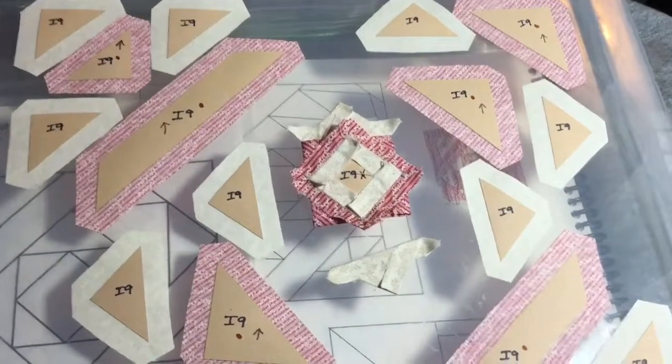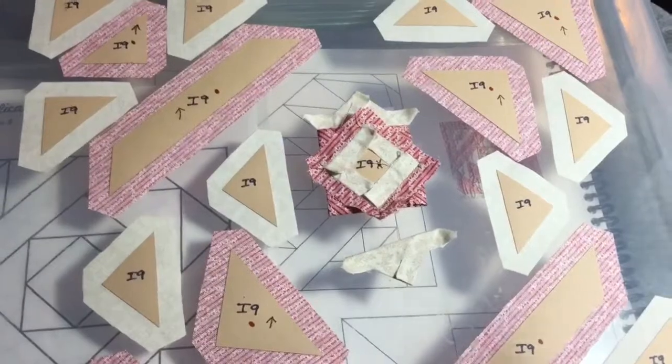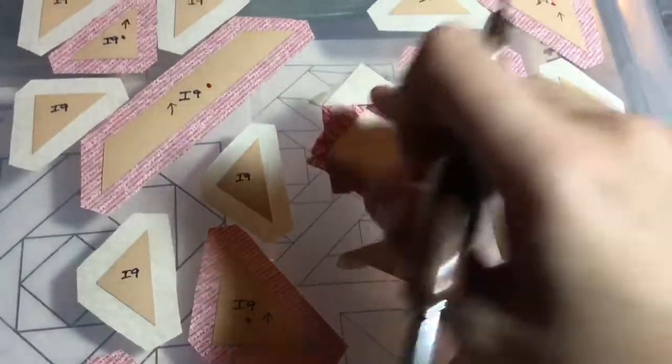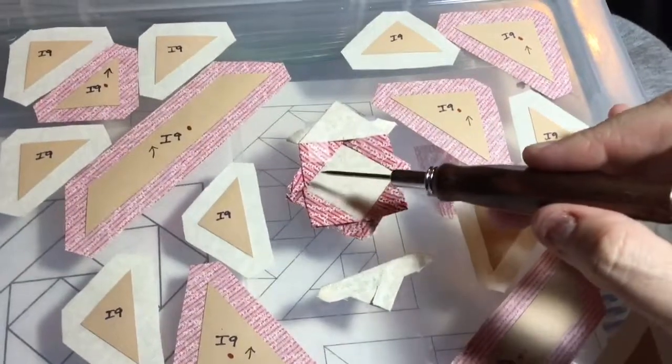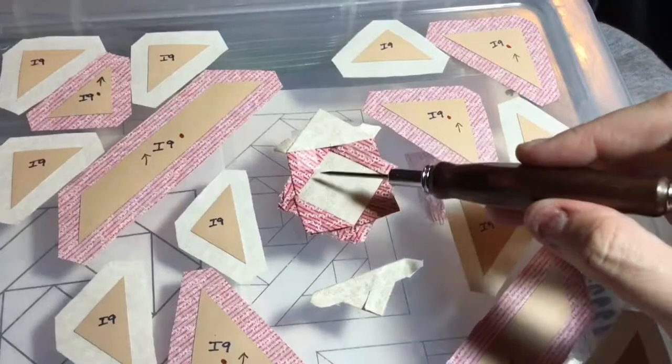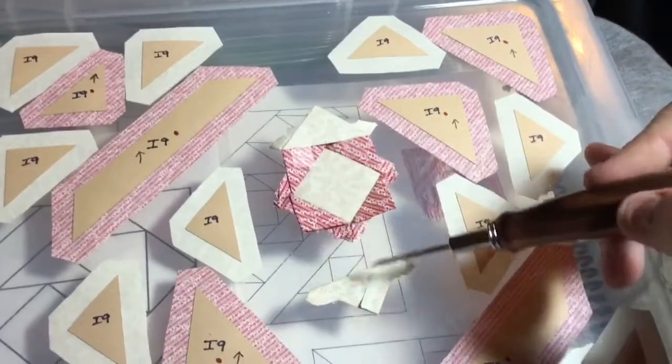I got a little carried away before I was filming, so I have the center section here completed. What I did is I made a little pencil mark in the middle of each side of my square, and then I basted my triangles.